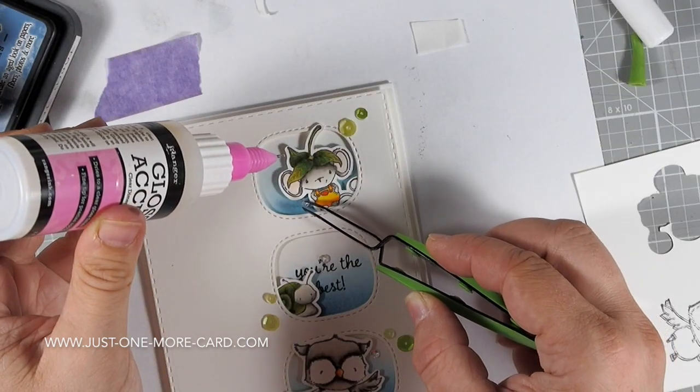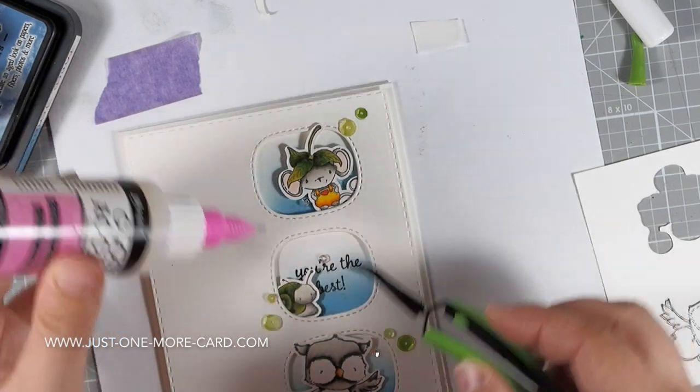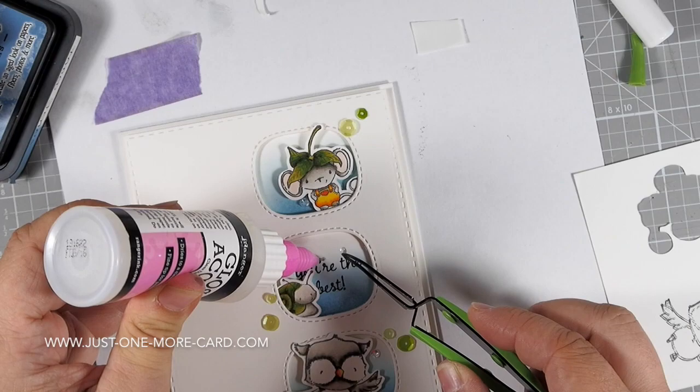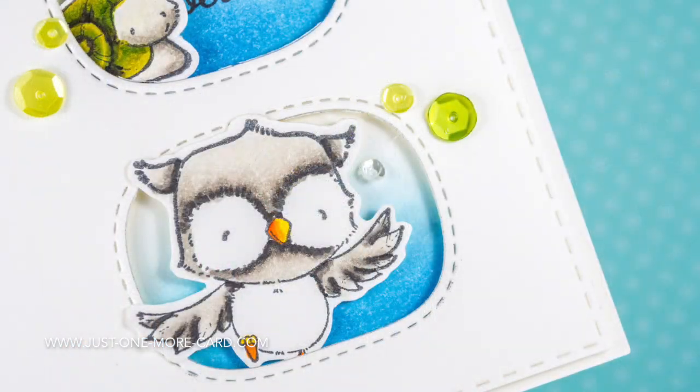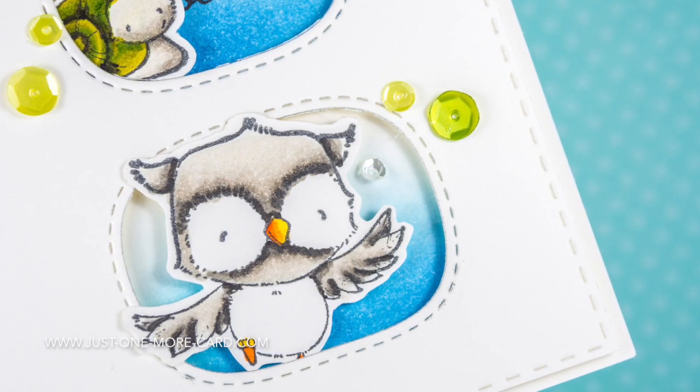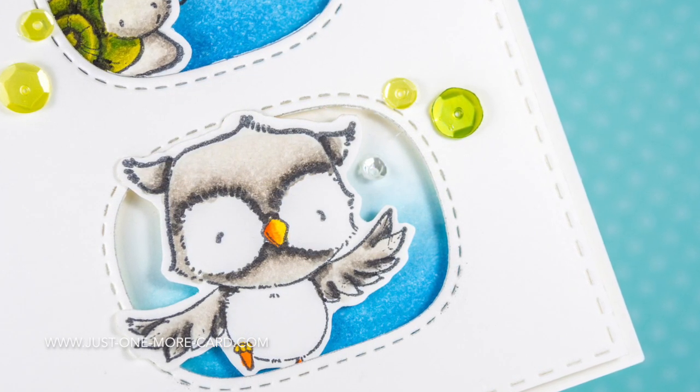And of course I could not help myself, I had to add some sequins by Pretty Pink Posh using different green colors here. I think that's lime green and mossy green and the tiny one is the new 3mm sparkling clear size. I will be listing all the supplies in the video description below and on my blog.